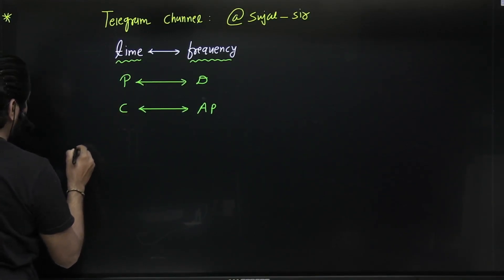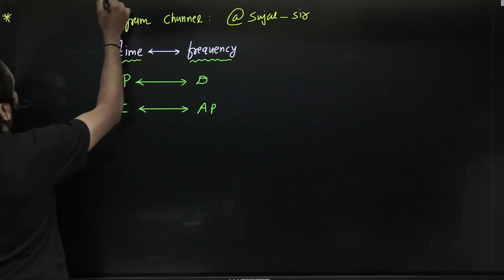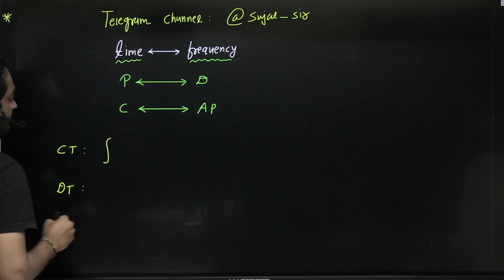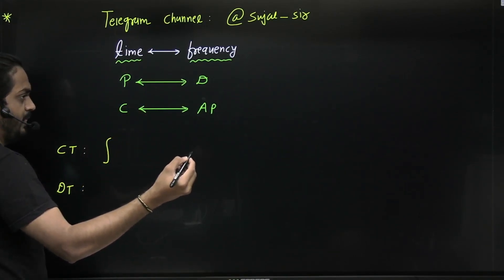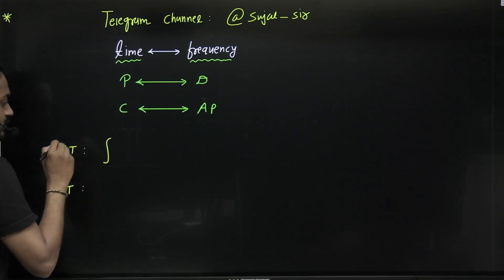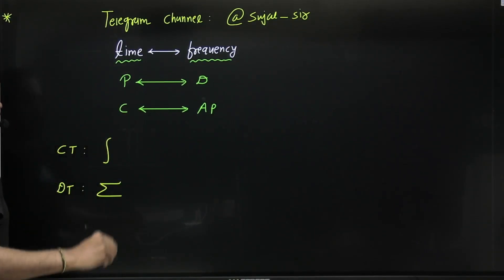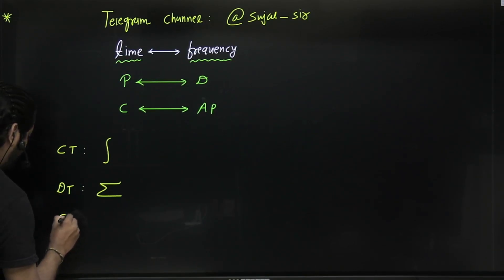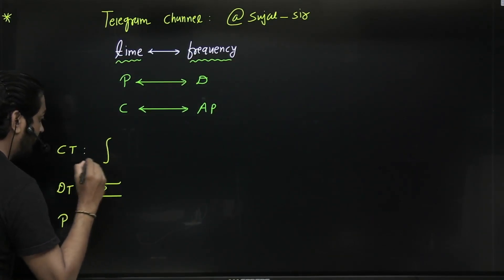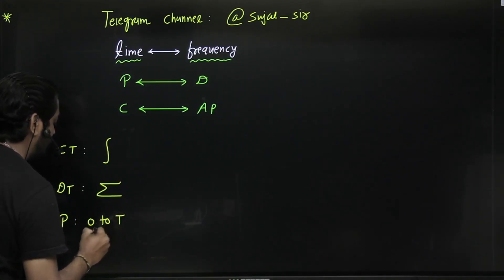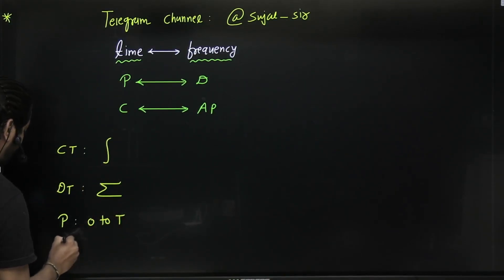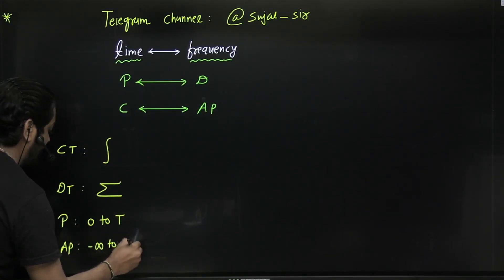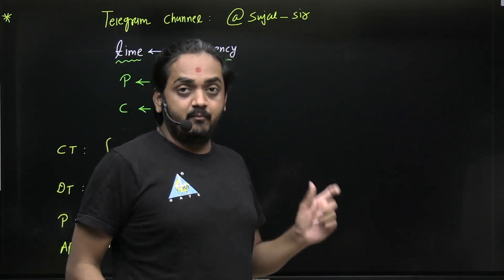If there is a continuous time signal or continuous frequency, then integration will come into picture. If it is a discrete time or discrete frequency signal, then summation will come into picture. If it is periodic, you have to do summation or integration over a fundamental time period — from 0 to T, or from −T/2 to +T/2. If it is an aperiodic signal, then integration or summation goes from minus infinite to plus infinite.